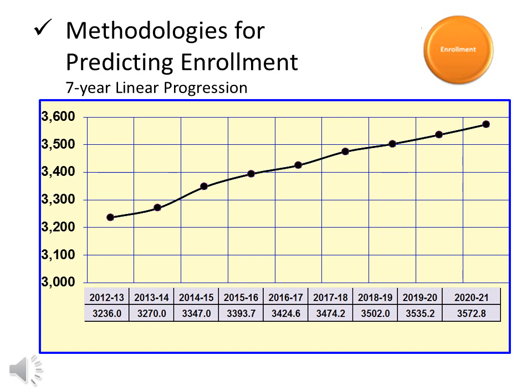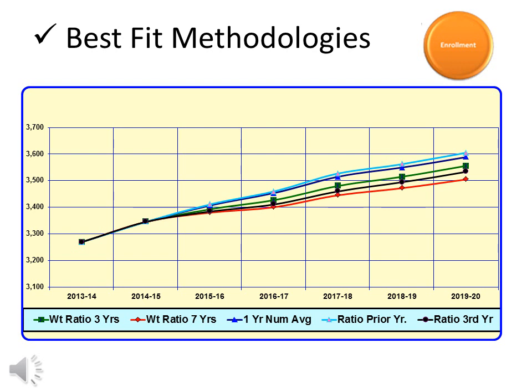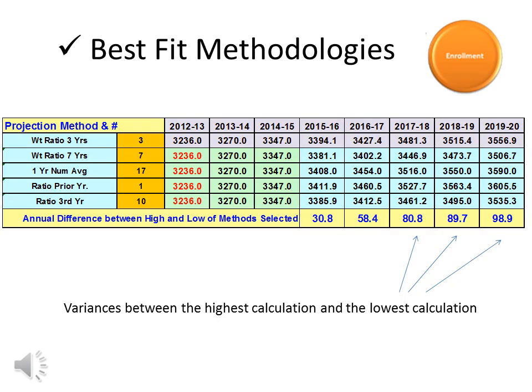The district also calculated enrollment predictions using a seven-year linear progression model, which has similar results to the previous two examples. This last graph shows a combination of five other enrollment prediction methods. In every example, school district enrollment is expected to be increasing significantly in the next five years. Enrollment predictions made over a short period of time have a high degree of accuracy, but different methods still result in different numbers. The variances range from 30 students next year to 98 students in 2019. When you consider that 98 students would be distributed across 13 grade levels, this variance between methods is not cause for concern. The district selects the methods which best fit what we know from our observations in our local communities and in our schools.